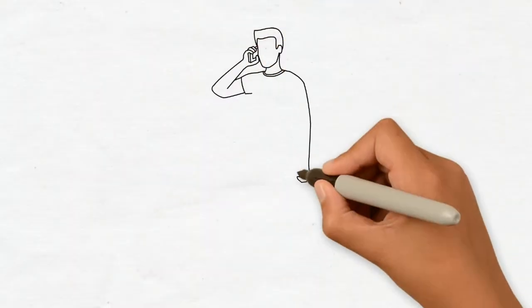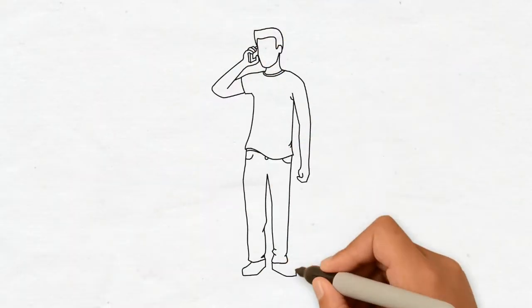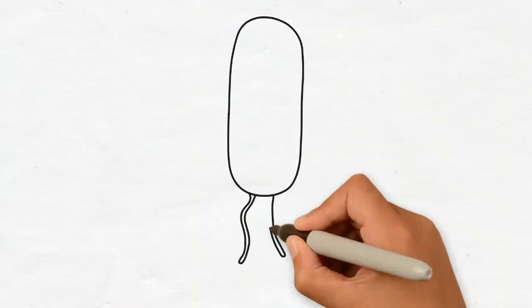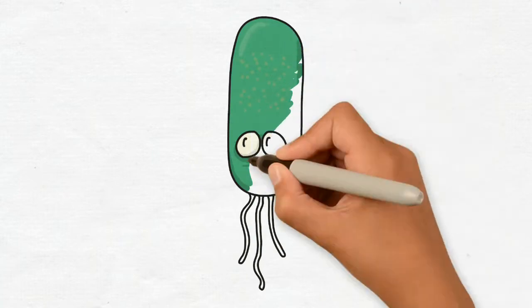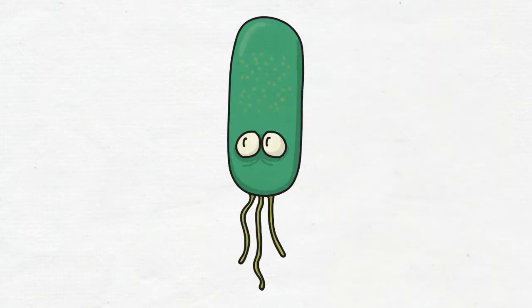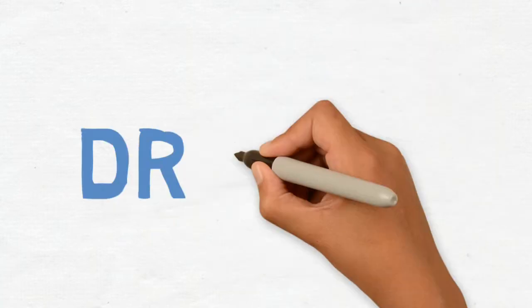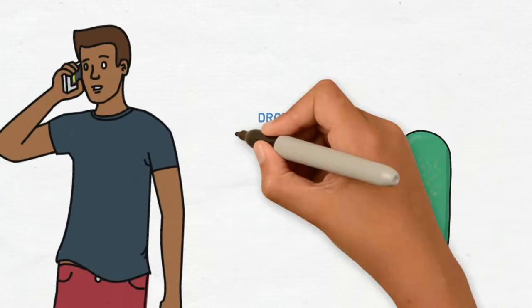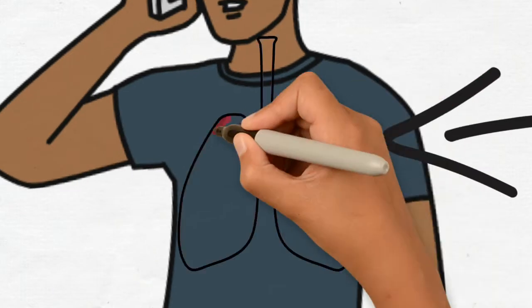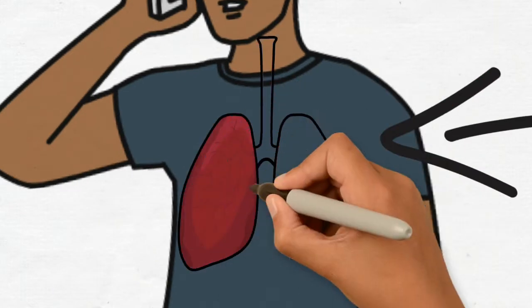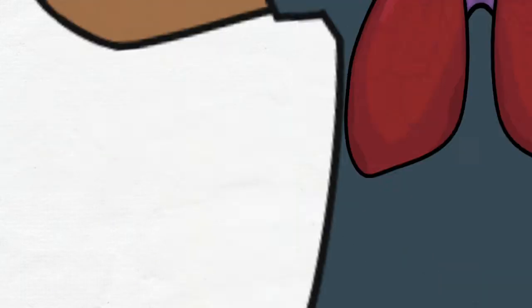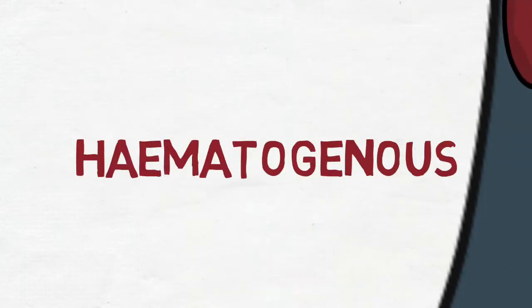TB Spine is caused by Mycobacterium tuberculosis, which is transmitted by droplet spread. Thereafter, through hematogenous or lymphatic spread from primary or secondary infection — which is usually pulmonary infection — the spine is infected.